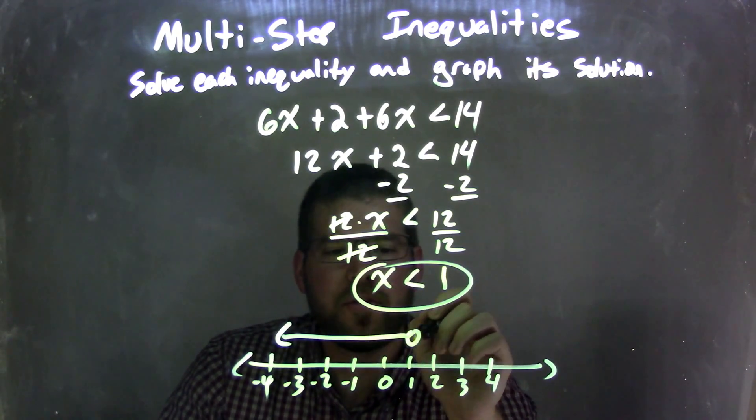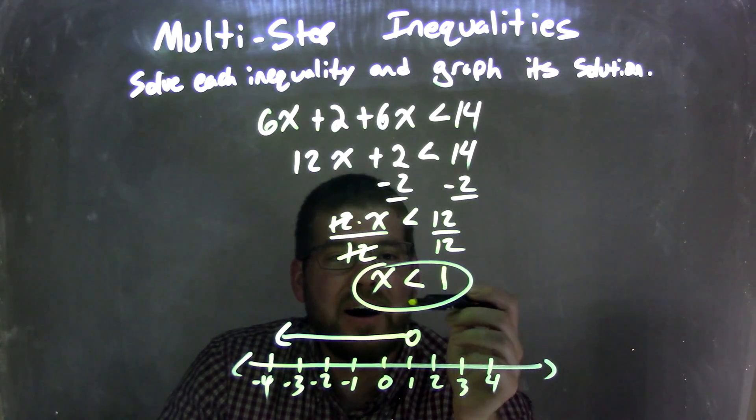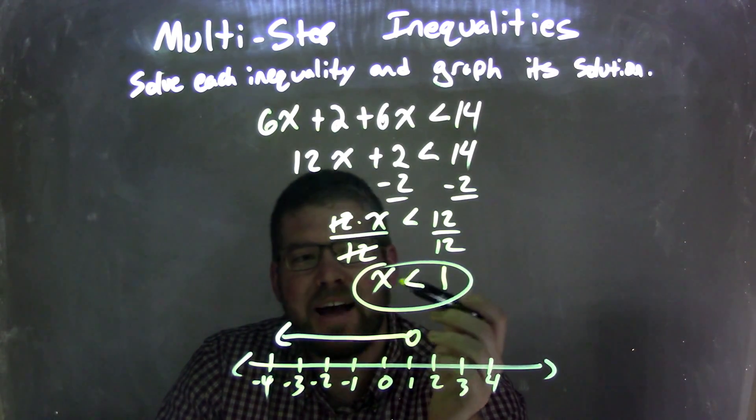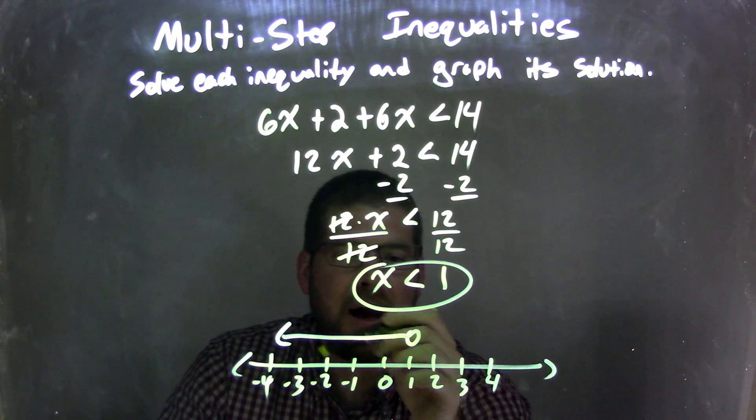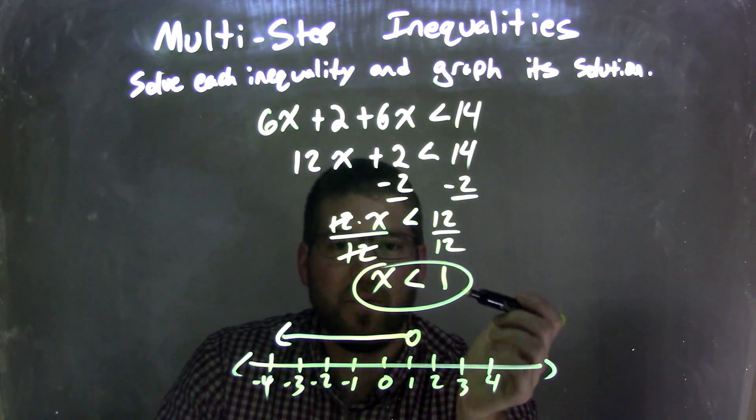Then, from there, I have an open circle at 1 because it's not equal to, and then I shade to the left because we said x is less than 1. And so now our graph here matches our final answer, which is x is less than 1.